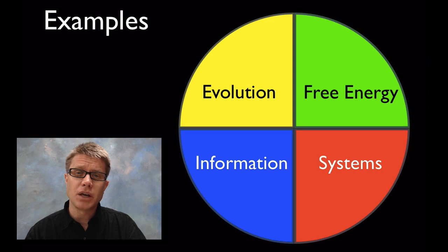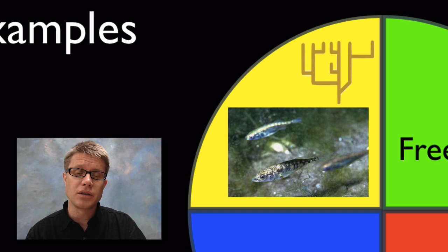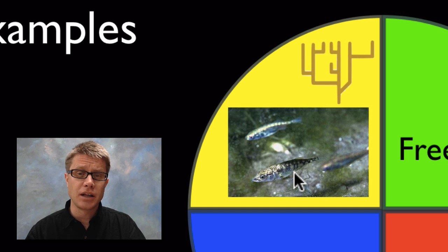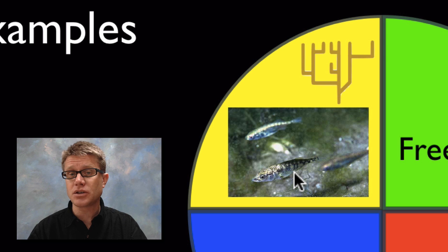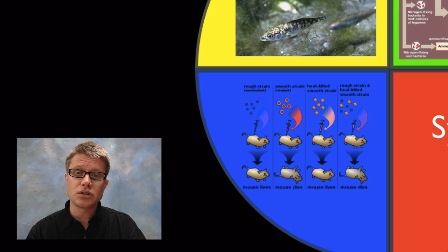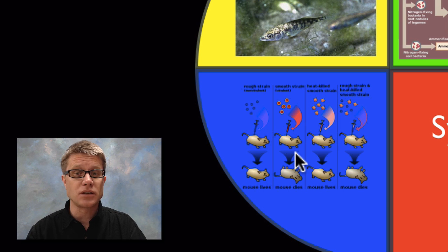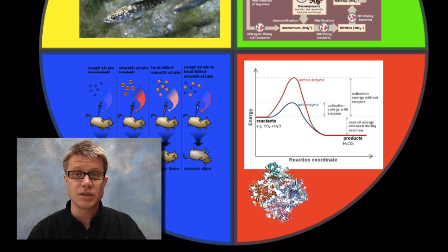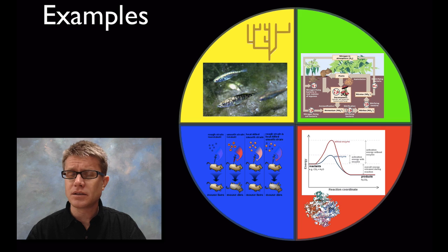The College Board wants you to collect data or understand data collection in each of the four big ideas. In evolution, a great example is the stickleback fish found in glacial lakes of Alaska, quickly adapting to their local environment — we could measure pelvis length over time as they move from areas with predatory fish to areas without. For free energy, it could be data related to nutrient cycling, like measuring nitrogen. For information, we could look at historical data like Frederick Griffith's famous experiment comparing virulent and non-virulent bacteria and measuring transformation. For systems, we could look at enzymes and measure how lowering activation energy increases enzyme activity.